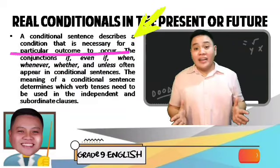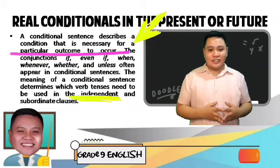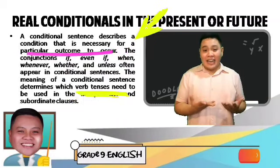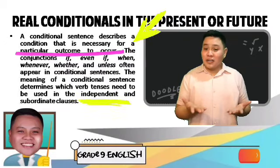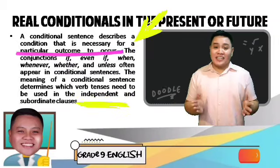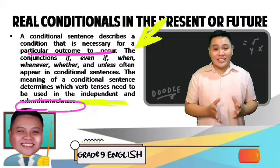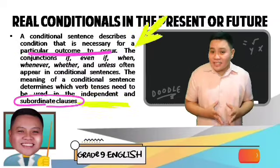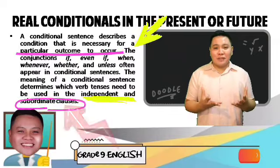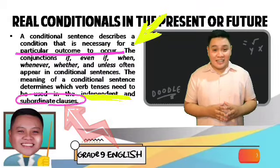The word independent clause was mentioned in the presentation. It is a clause that can stand by itself like a simple sentence — it contains a subject and a verb and makes sense by itself. How about a subordinating clause? A subordinating clause cannot stand alone as a complete sentence. It is also considered an incomplete thought because of the subordinating conjunction that is included in the sentence.